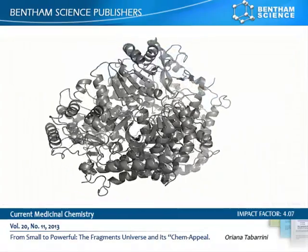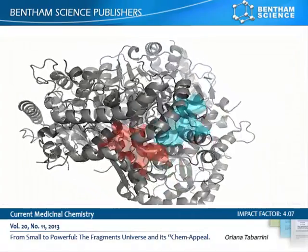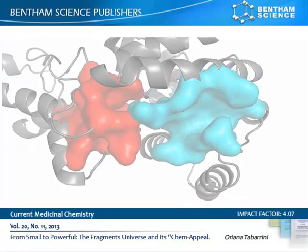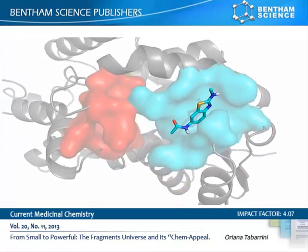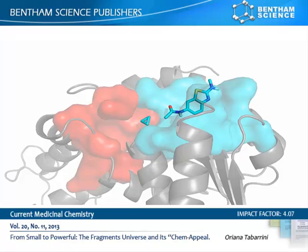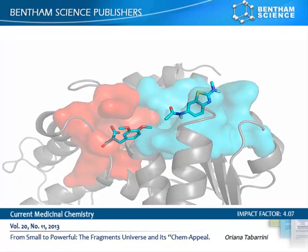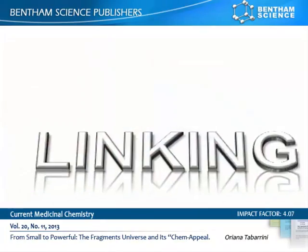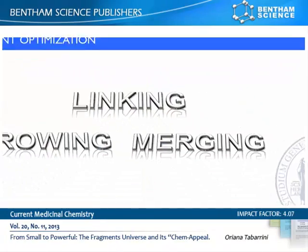Let's try to imagine a protein with a binding site large enough to host two or more binding fragments, in turn discovered by independent rounds of screening. Once found, the best pair is linked, resulting in a tighter binder in the linking strategy.